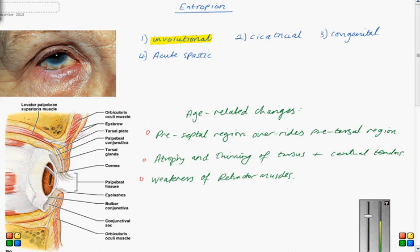Okay, so this is a short lecture on the eyelid disorder of entropion. Entropion is basically the inward rotation or inversion of the eyelids which causes the eyelashes to come in contact with the ocular surface.